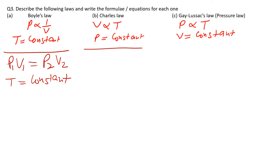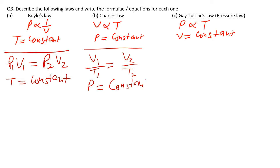The formula for Charles' Law is V₁/T₁ = V₂/T₂, where the subscript 1 values are initial and subscript 2 values are final. V₁ is the initial volume, V₂ is the final volume, T₁ is the initial temperature, and T₂ is the final temperature. The condition is that the pressure of the gas must be constant.